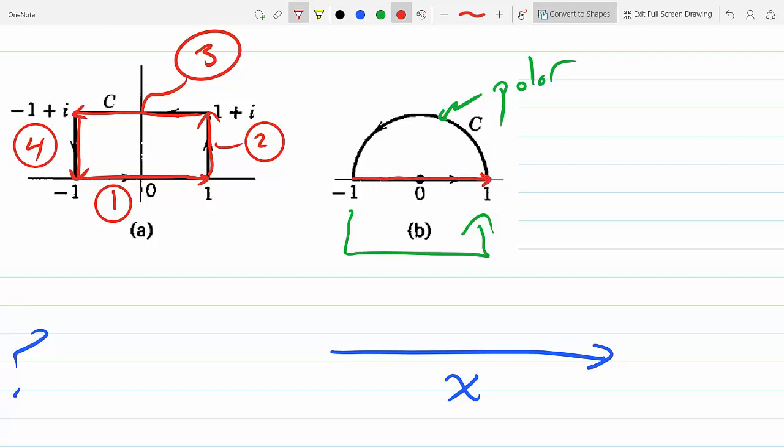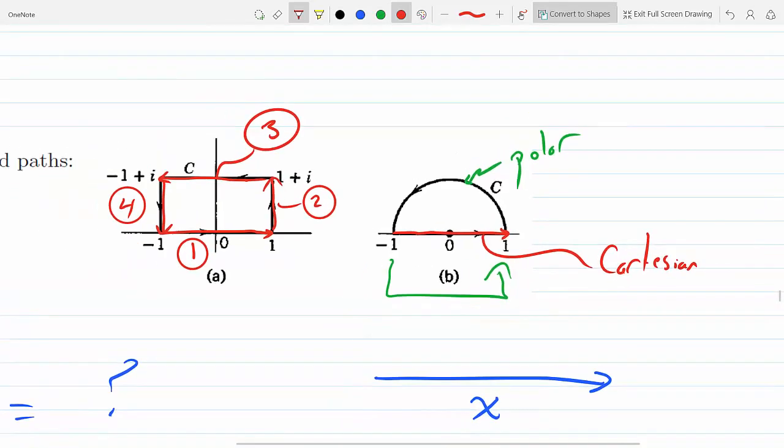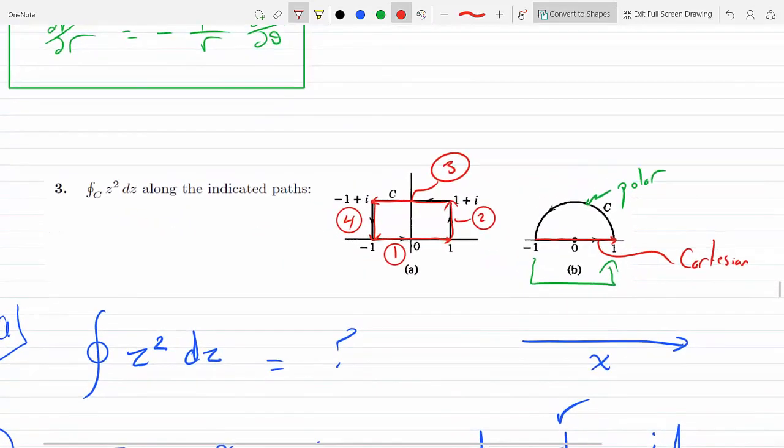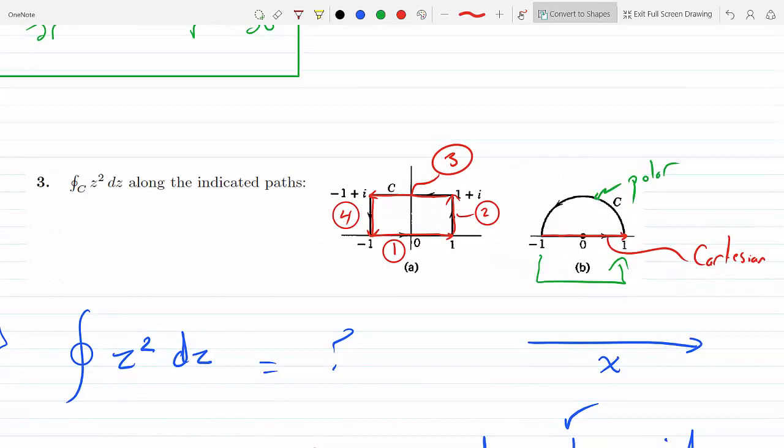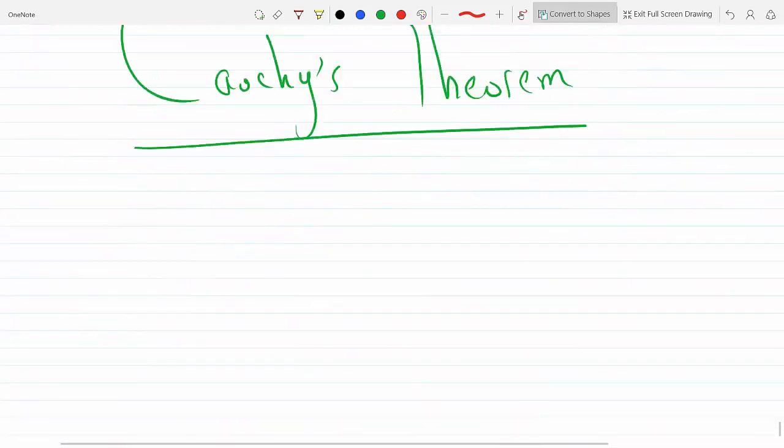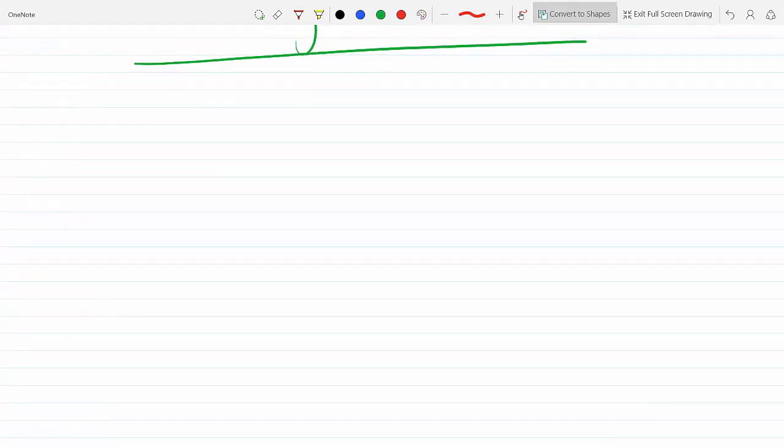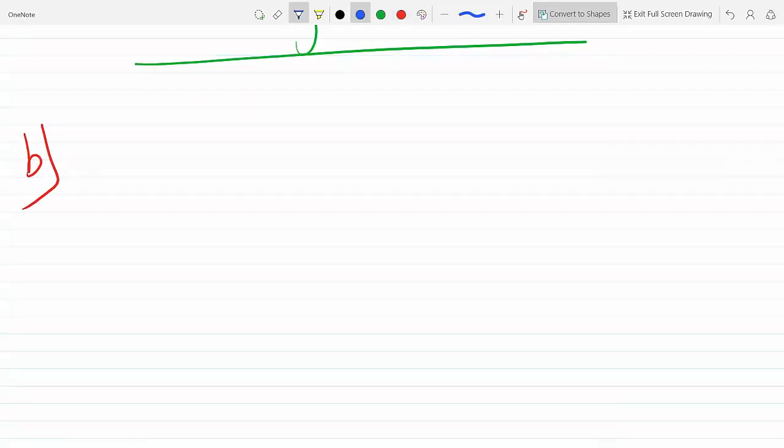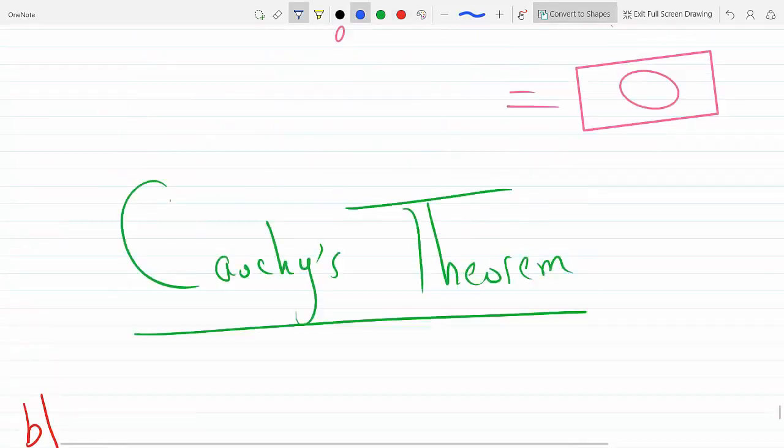From here to here we can do Cartesian to evaluate it, and the question is to evaluate z squared dz along that C. So I'm gonna work it out here as you do it there.